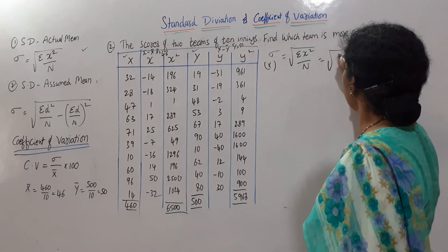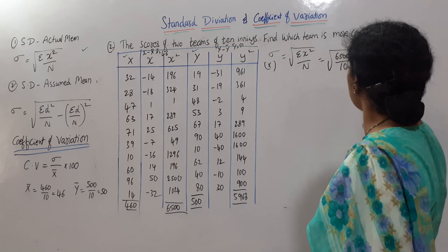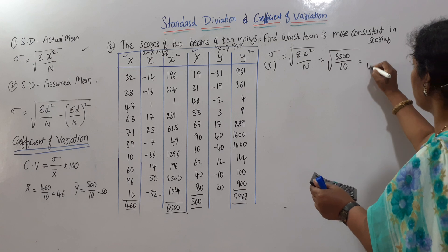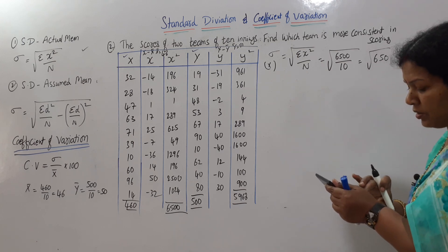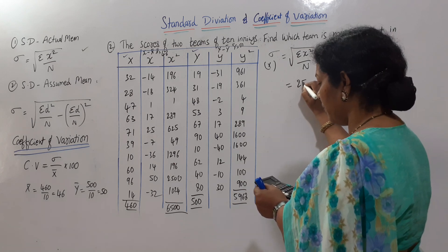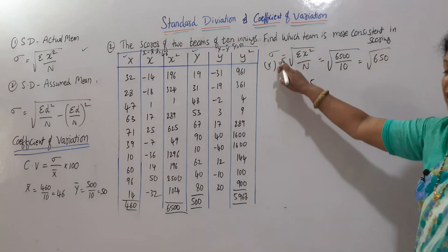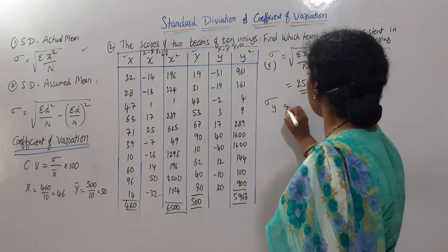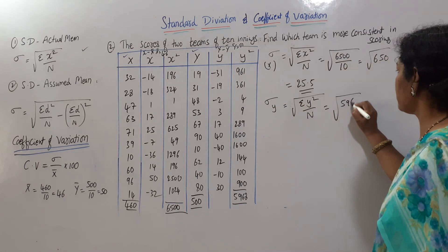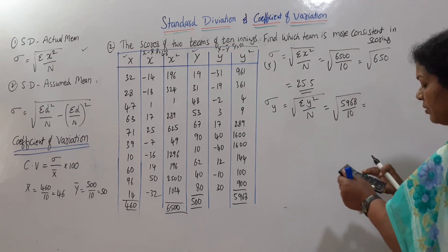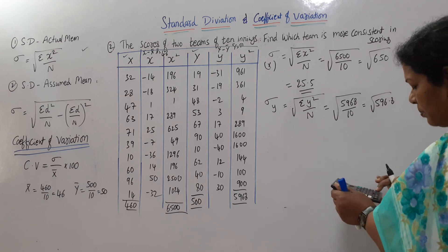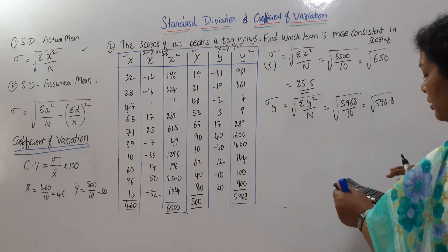Standard deviation of X: root of (Σx² / n) = root of (6500 / 10) = root of 650 ≈ 25.5. Standard deviation of Y: root of (Σy² / n) = root of (5968 / 10) = root of 596.8 ≈ 24.43. So rho X = 25.5 and rho Y = 24.43.